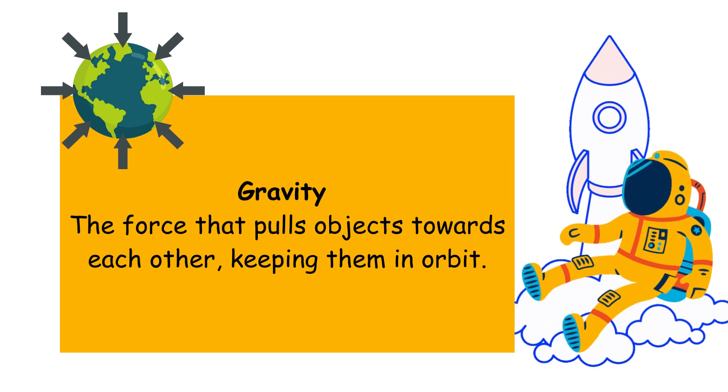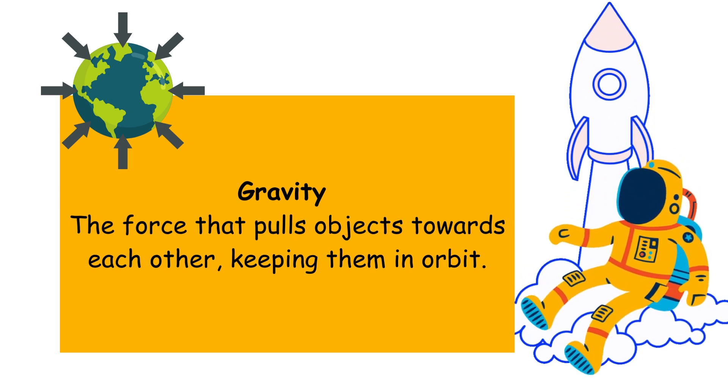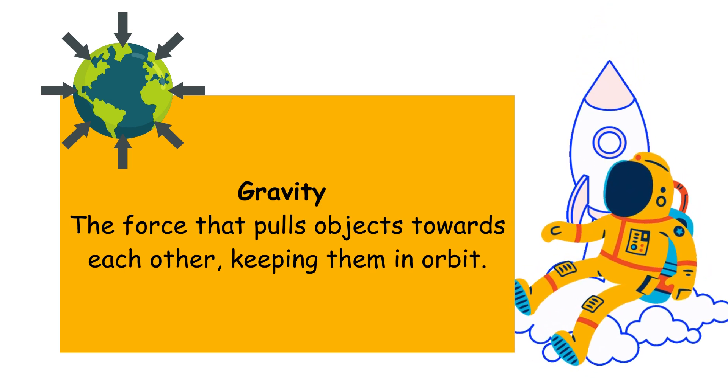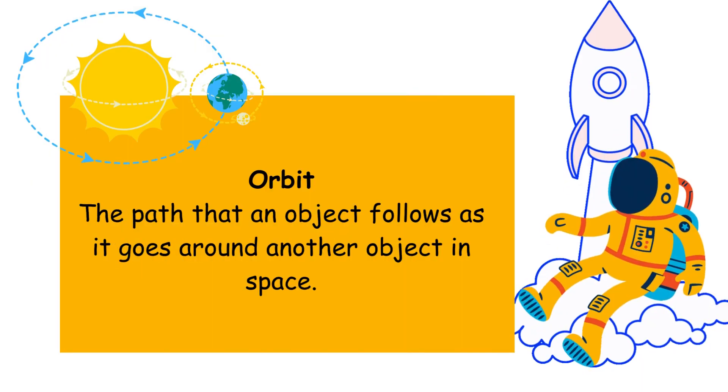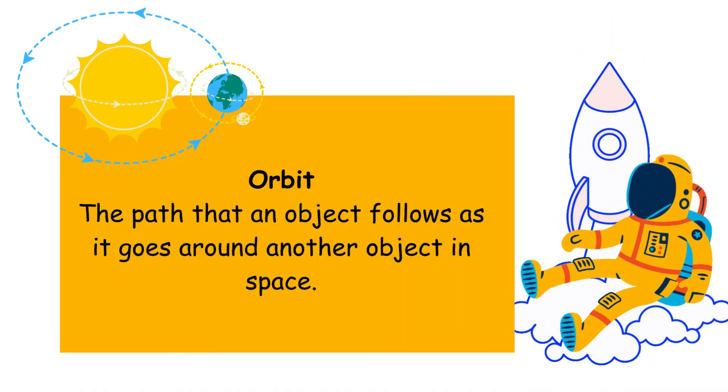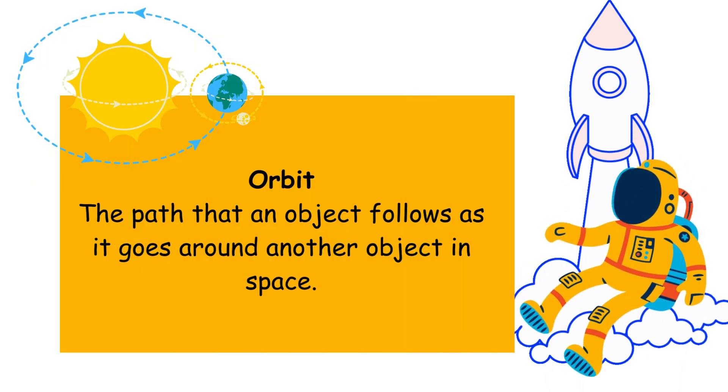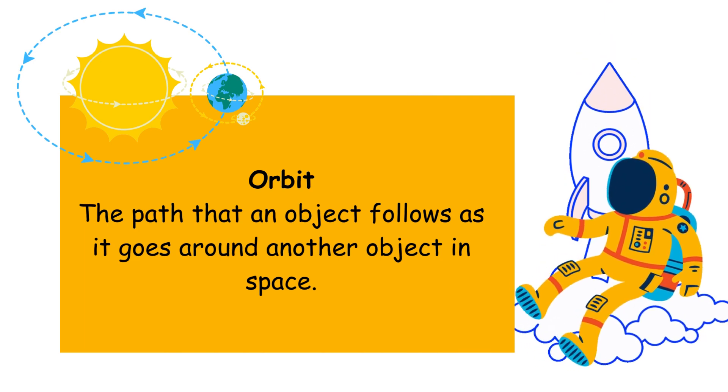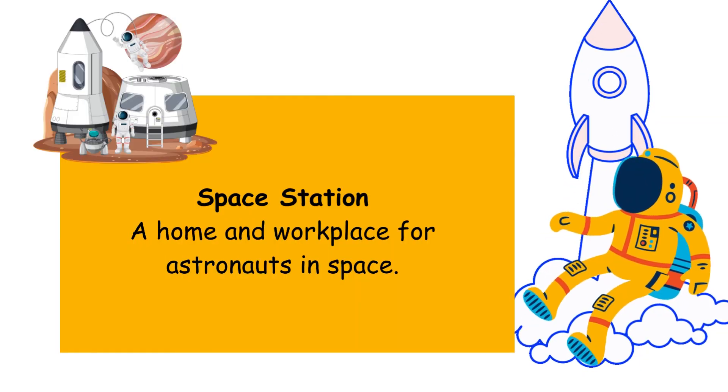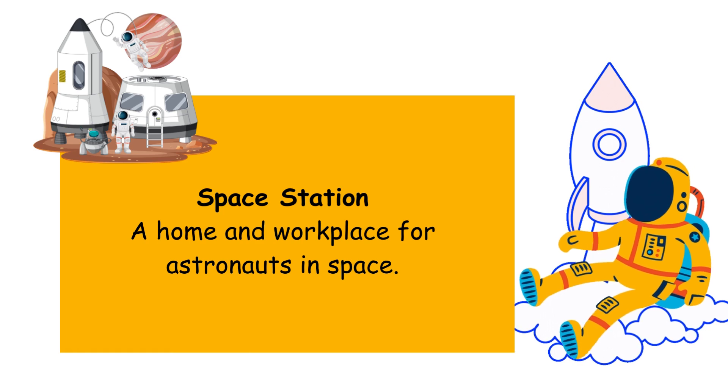Gravity: the force that pulls objects towards each other, keeping them in orbit. Orbit: the path that an object follows as it goes around another object in space. Space Station: a home and workplace for astronauts in space.